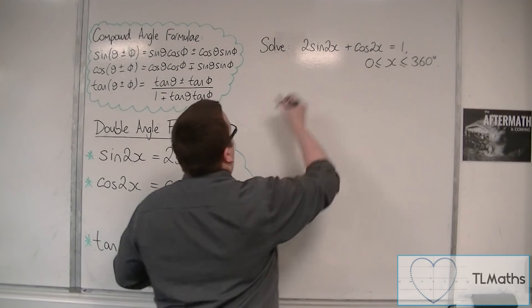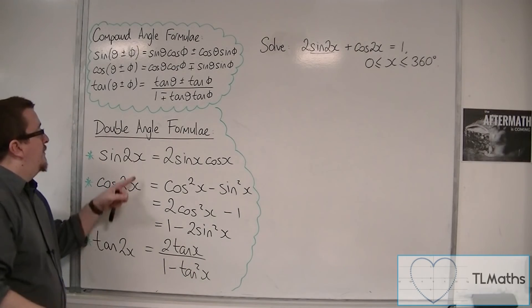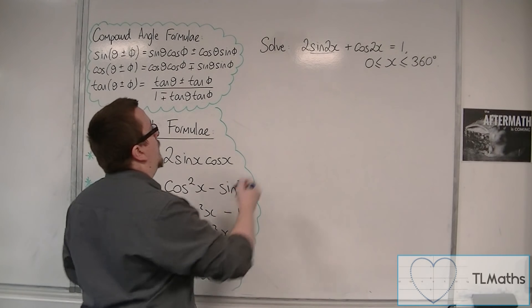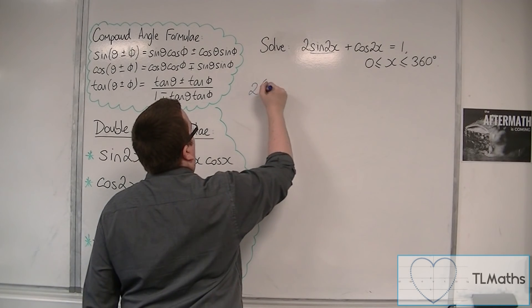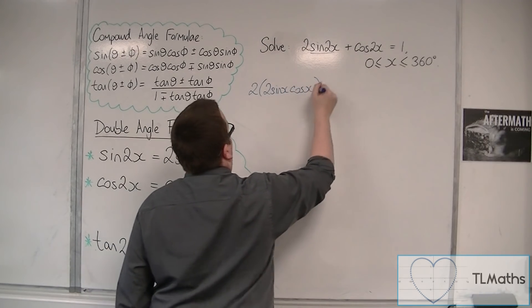So, sin(2x) is a double angle, and there's only one thing I can possibly replace it with: 2sin(x)cos(x). So, I've got two lots of 2sin(x)cos(x), plus...